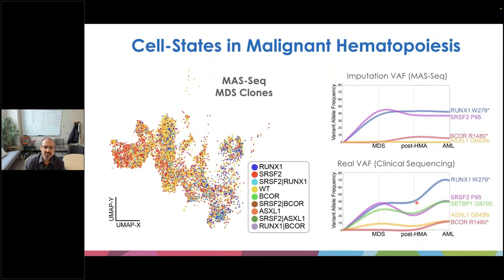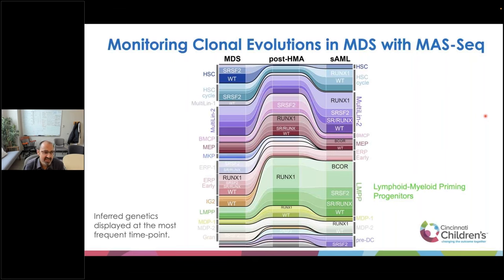One reason we believe these clonal predictions are likely real: we performed gene expression analyses with non-imputed and imputed clones between mutant and wild-type and saw similar gene expression differences. Importantly, we see similar clonal frequencies to what we'd expect based on clinical genetic sequencing, matching the imputed VAF of these cells without over-predicting clones. Looking at these data collectively using a Sankey plot, we can look at the genetics of each cell state combined with which cell types they're present in.